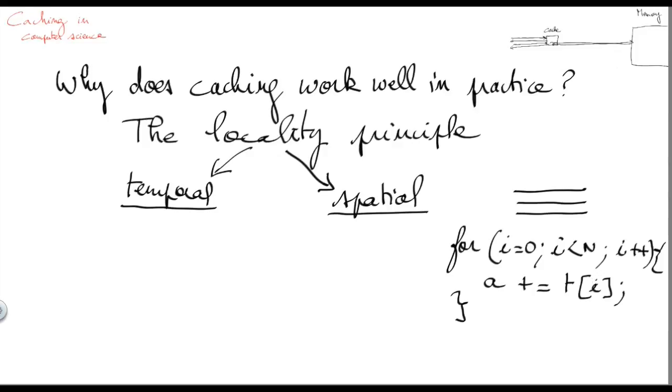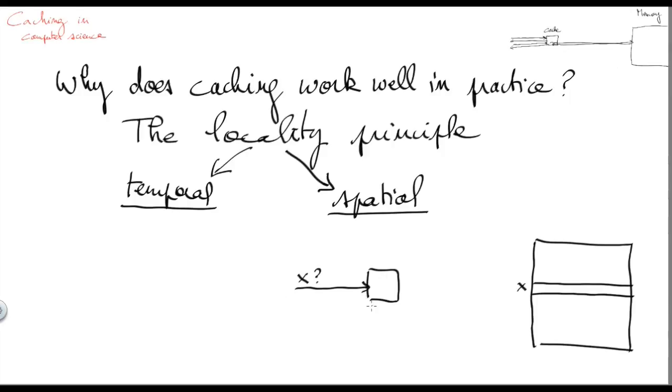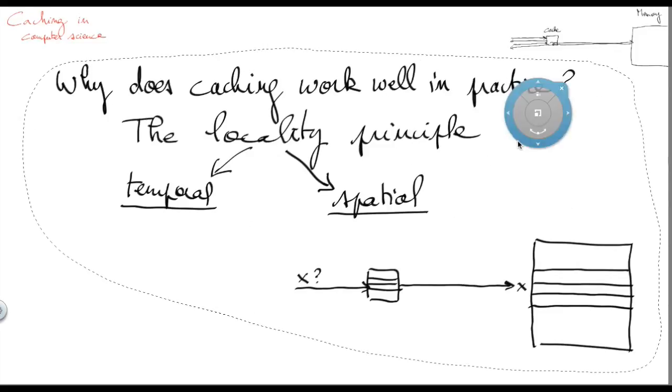To leverage spatial locality in addition to temporal locality, we can slightly modify the basic approach. When we get a request for item X and get a cache miss, we have to go to the slow memory. Instead of simply requesting and fetching this precise item, what we can do is amortize this long latency to also fetch the surrounding items, so that we'll not only bring back X but also these other items to increase the likelihood that we'll find the next requested items directly in the cache.